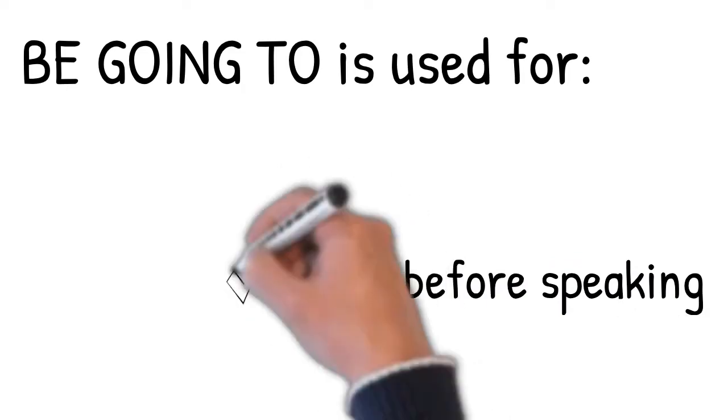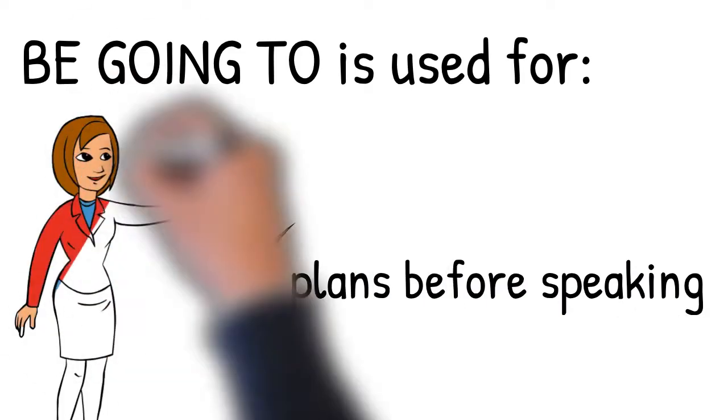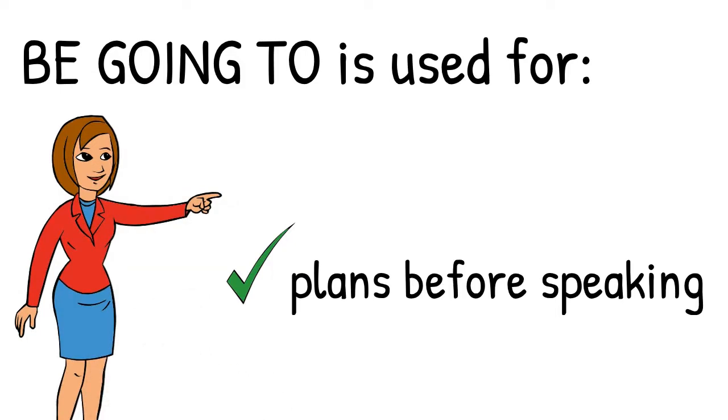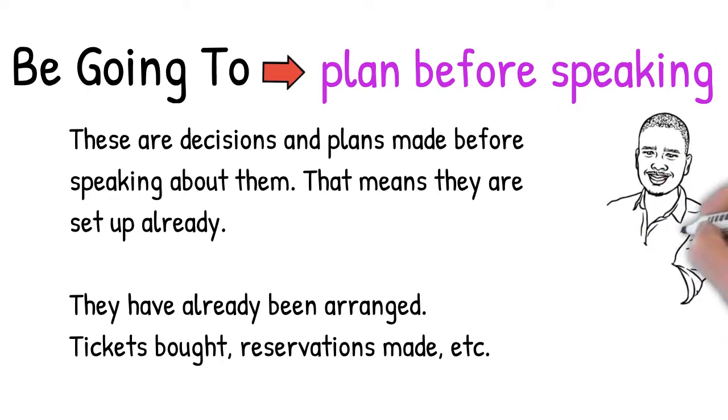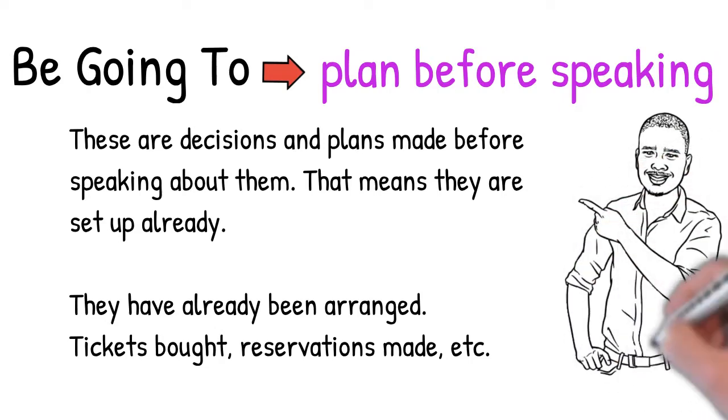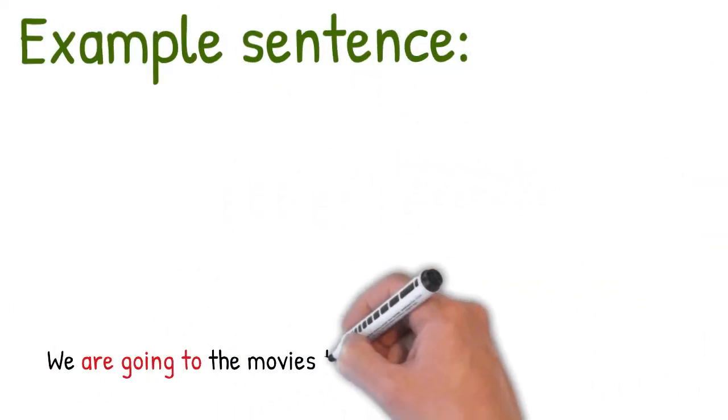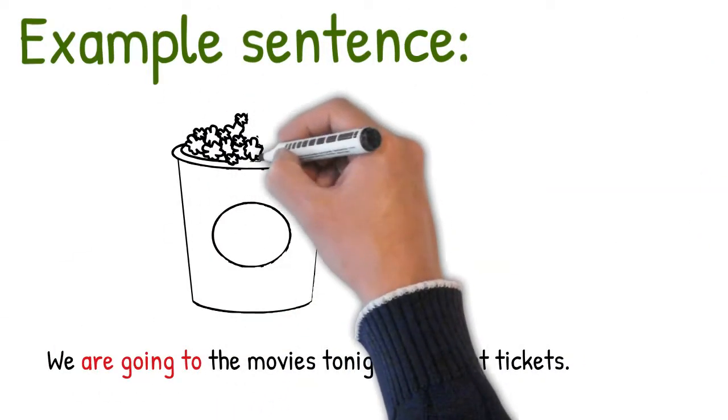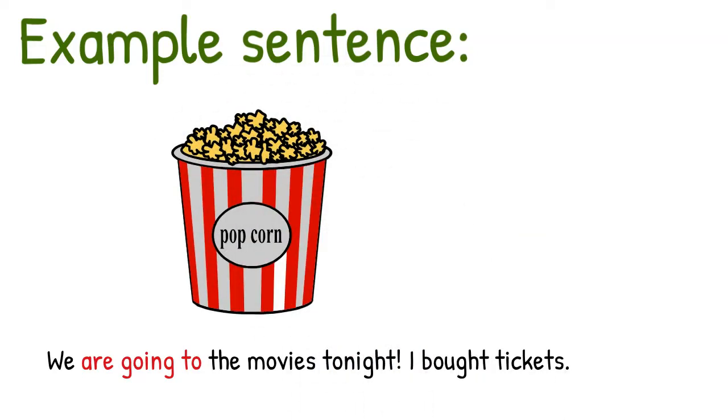Be going to is used for plans before speaking. If you make a plan before you speak, then you must use be going to. It's already in place. So be going to is these are decisions and plans made before speaking about them. That means they are already set up. They have already been arranged. Tickets bought, reservations made, etc. Here's another example. We're going to the movies tonight. I bought tickets. Tickets were bought. Plans were made. Reservations were done. It's happening.